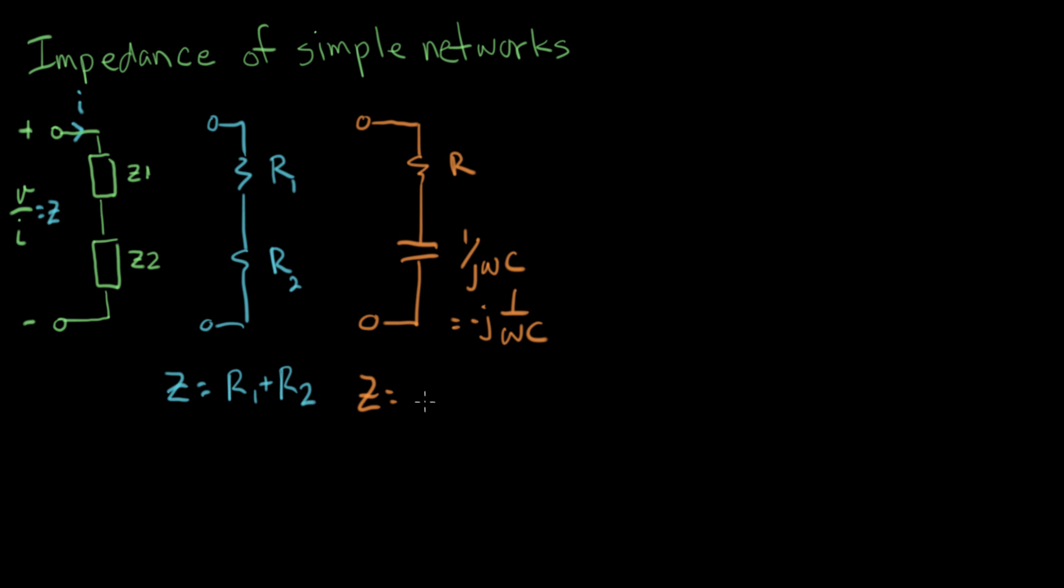So the series combination of two impedances is the sum of the impedances. R plus one over j omega C. This is the impedance of this network here.